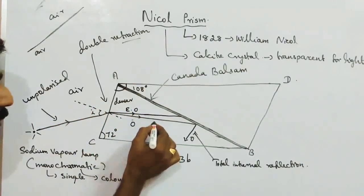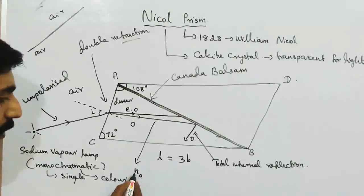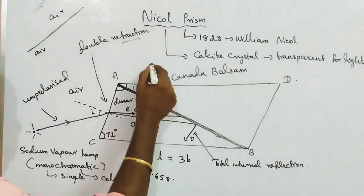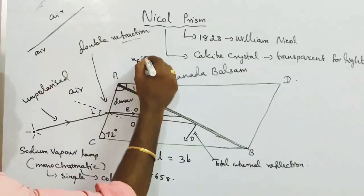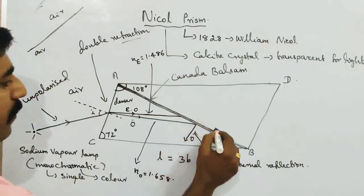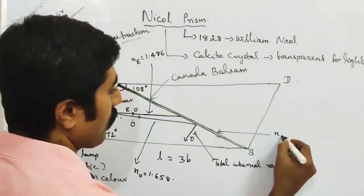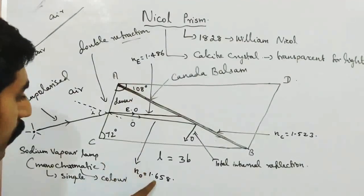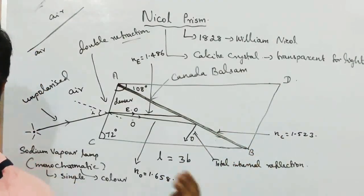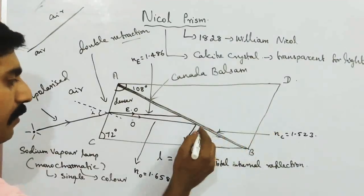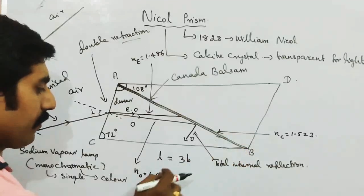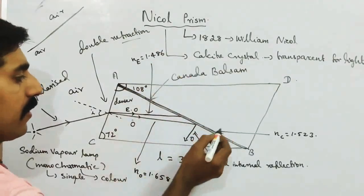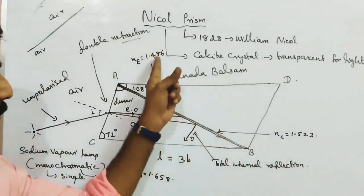For the ordinary ray, the refractive index N is 1.658. For the extraordinary ray, the refractive index is 1.486. For Canada Balsam, the refractive index is 1.523. Since the ordinary ray refractive index (1.658) is greater than Canada Balsam (1.523), the ordinary ray undergoes total internal reflection and does not pass through.